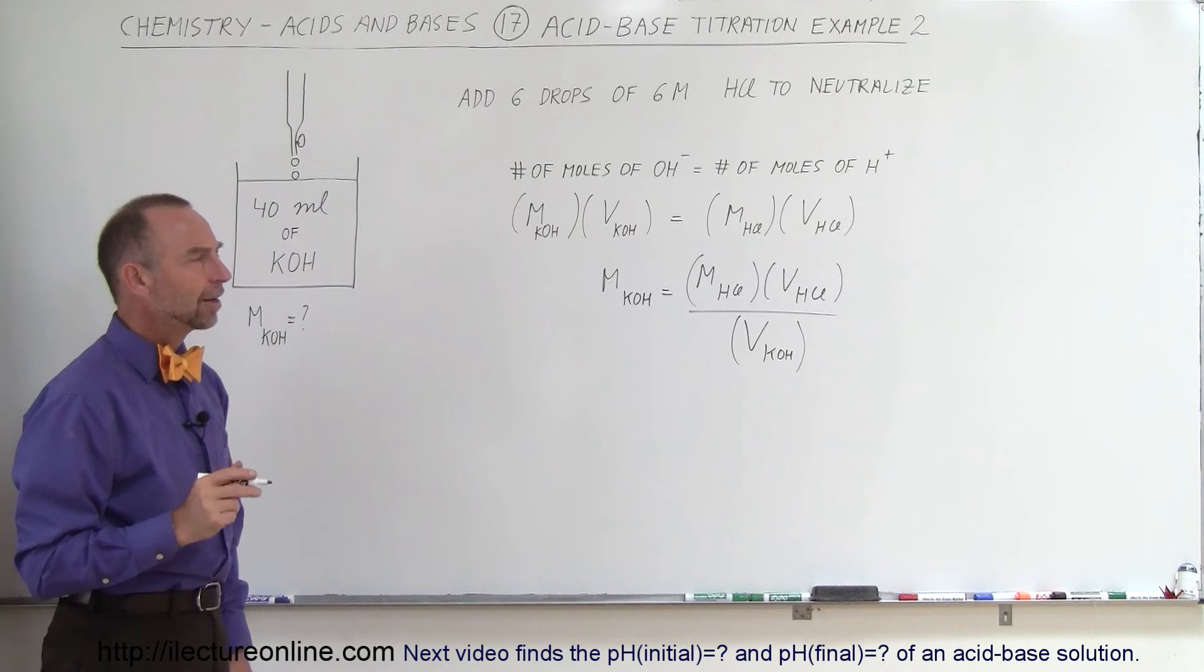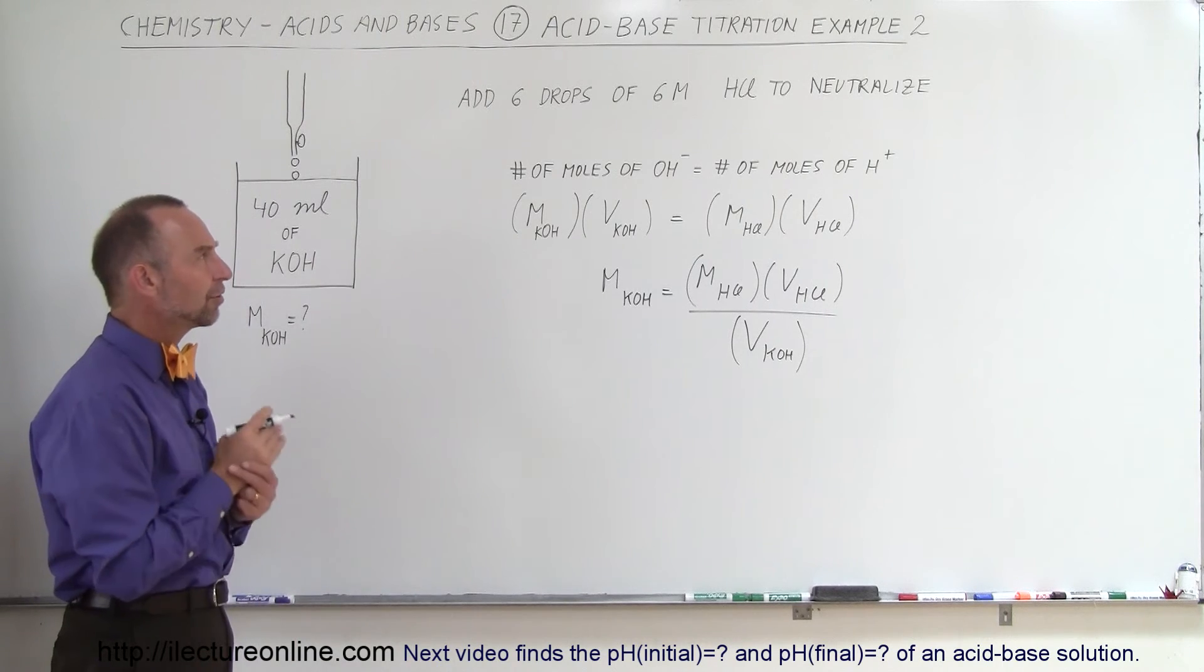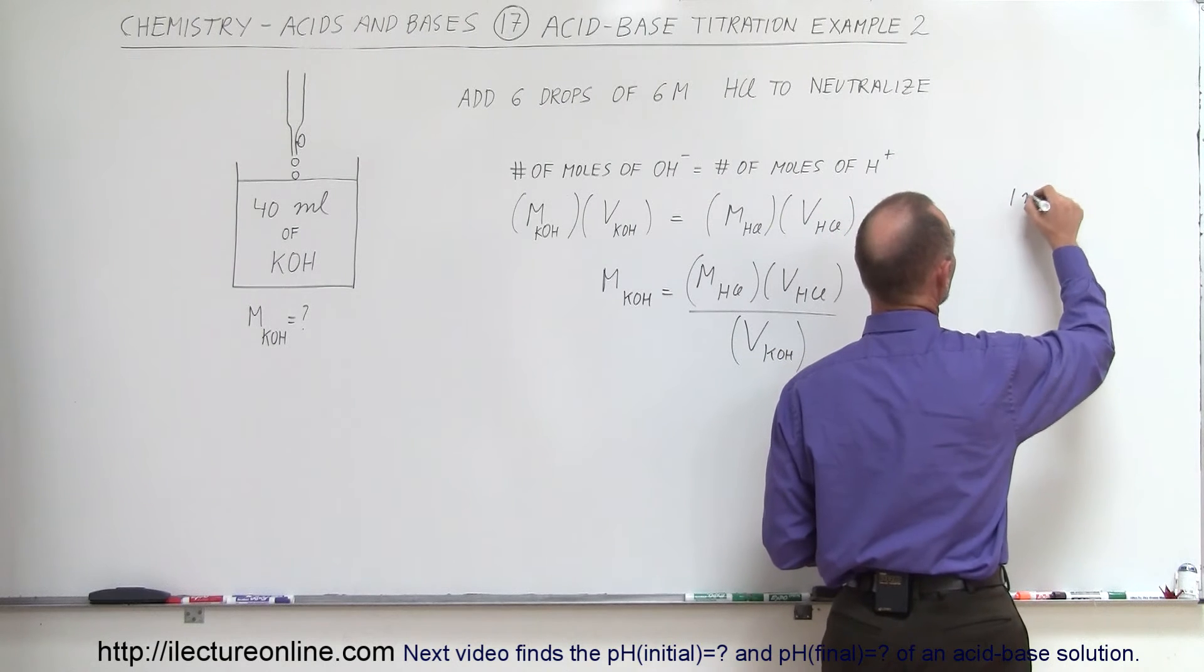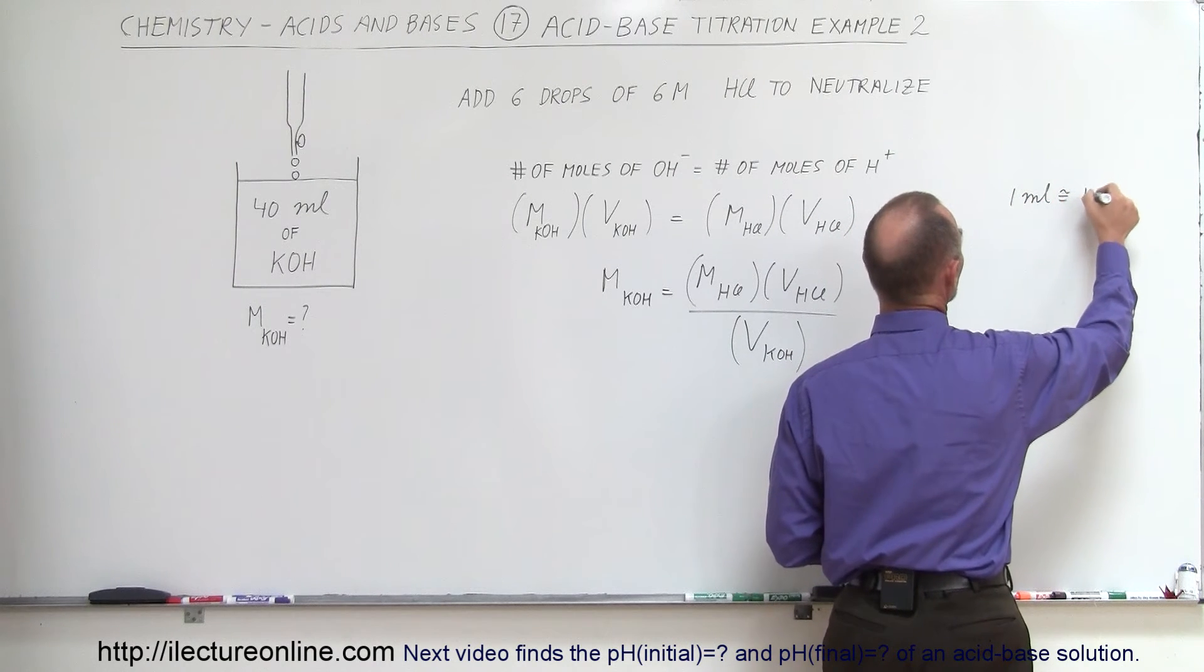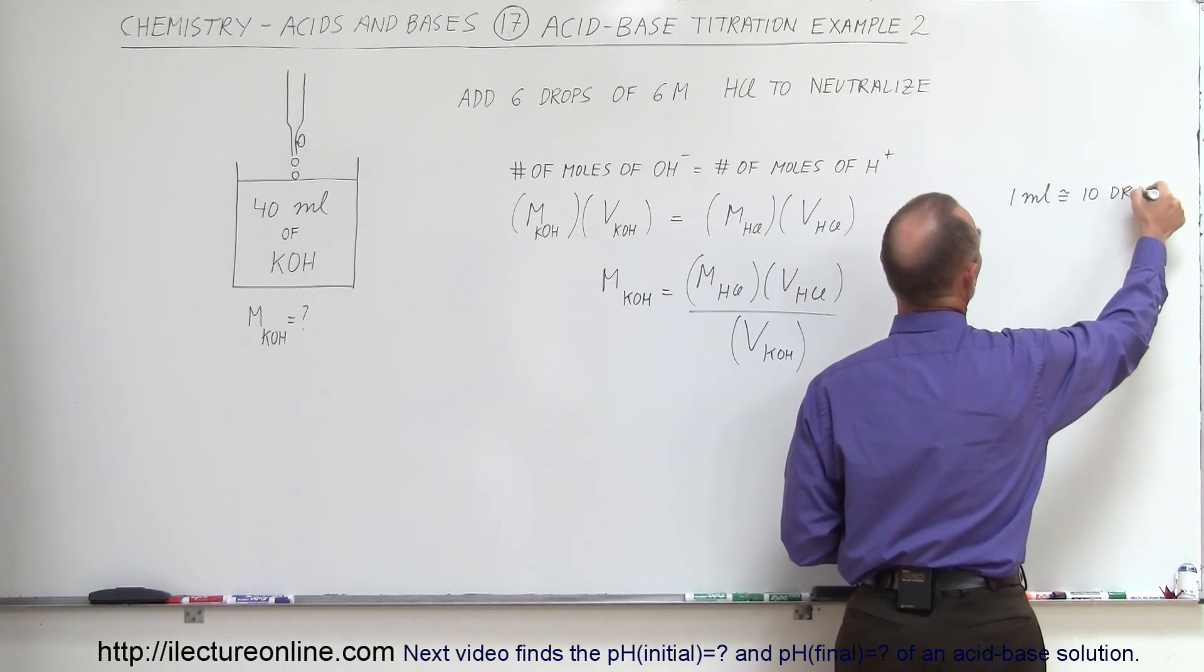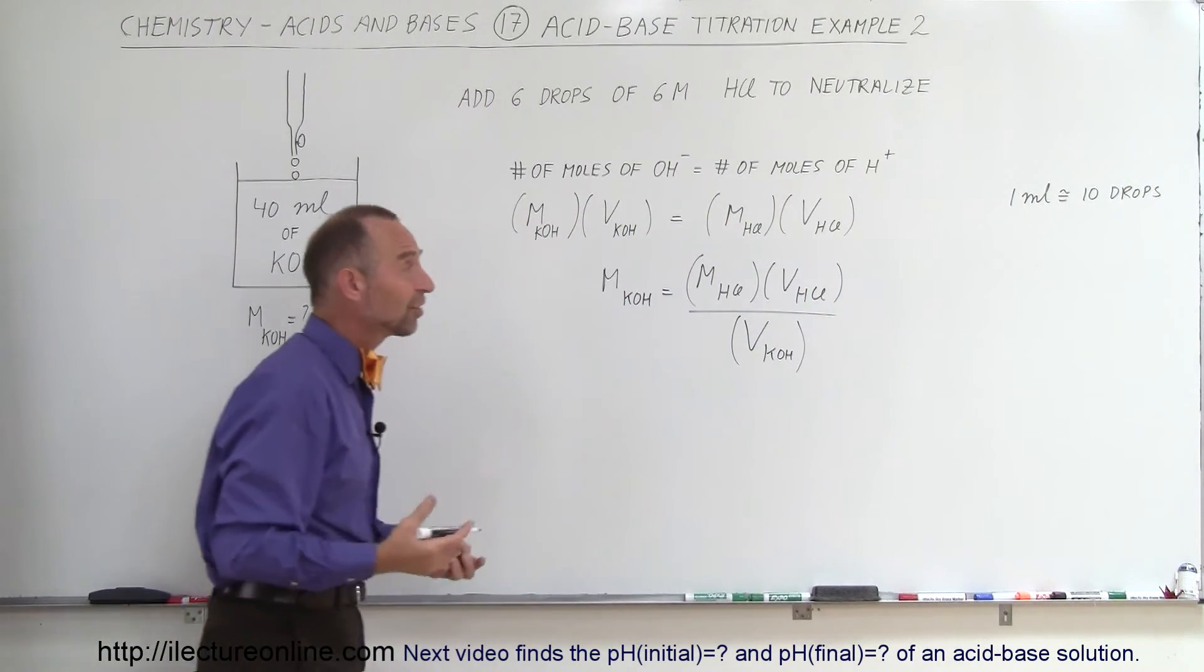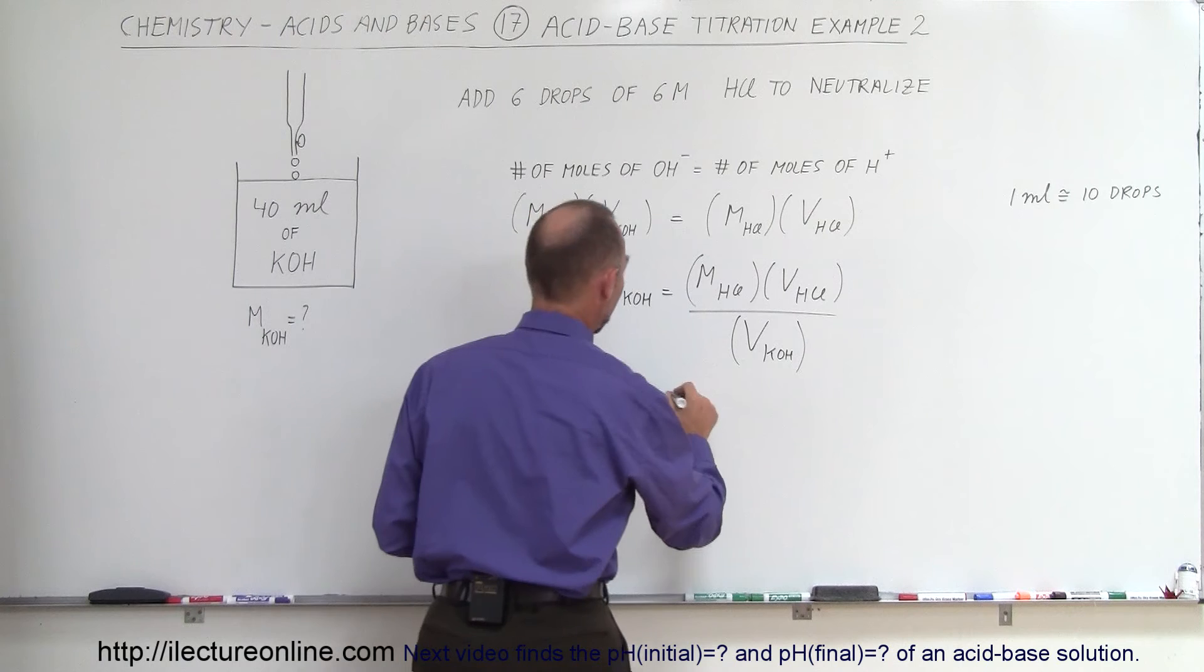Now, we added six drops. What is the volume of six drops? Well, it turns out that one milliliter is approximately equal to ten drops. So in this case, we can say that, therefore, six drops is about 0.6 milliliters. Using that information,